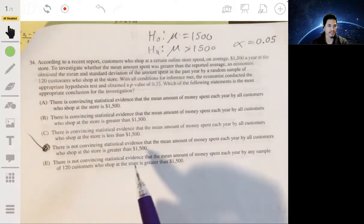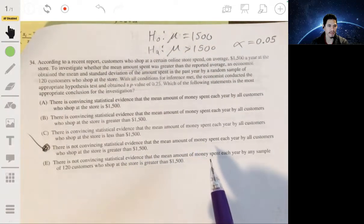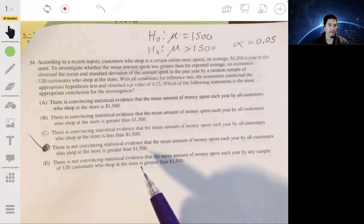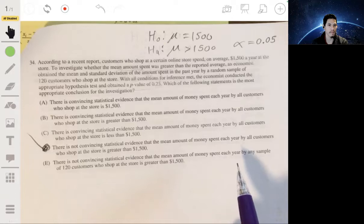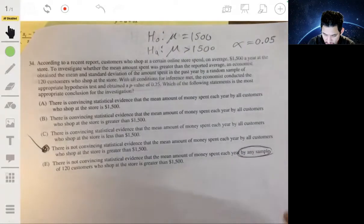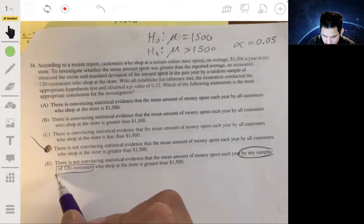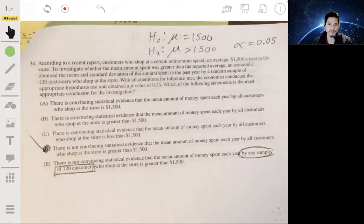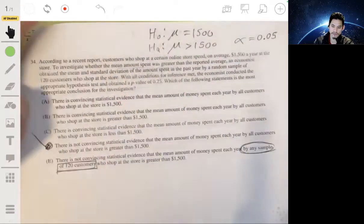E, there is not convincing evidence that the mean amount spent each year by any sample. Oh, so see, by any sample, they try to get all technical and smart. That's different. A sample, remember, is a group used to help estimate the true population parameter. Anyway, the answer is D for sure. Don't get thrown off by that.